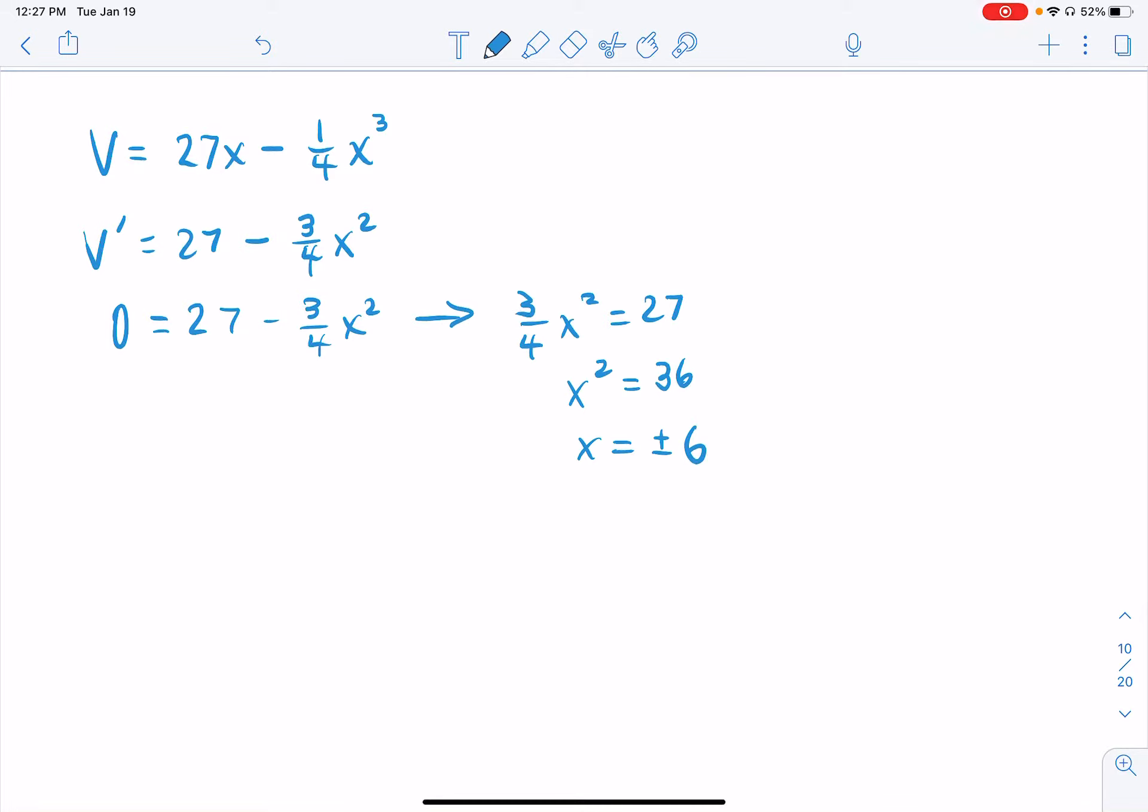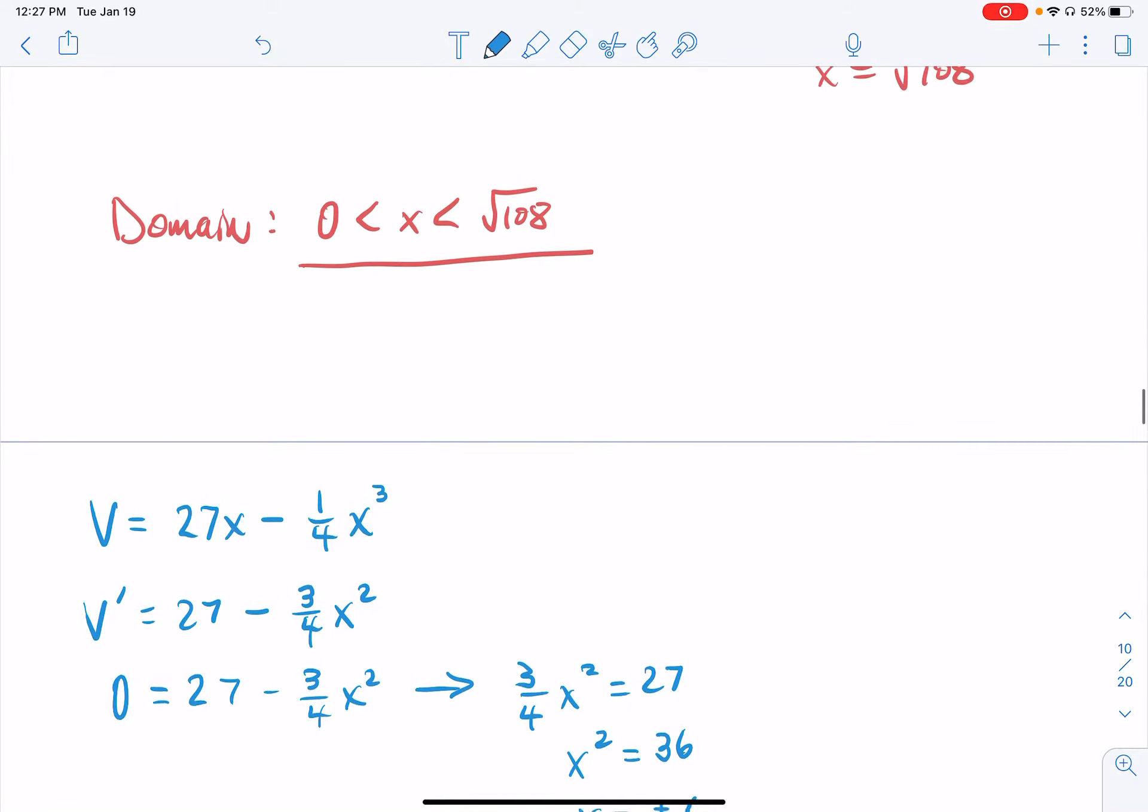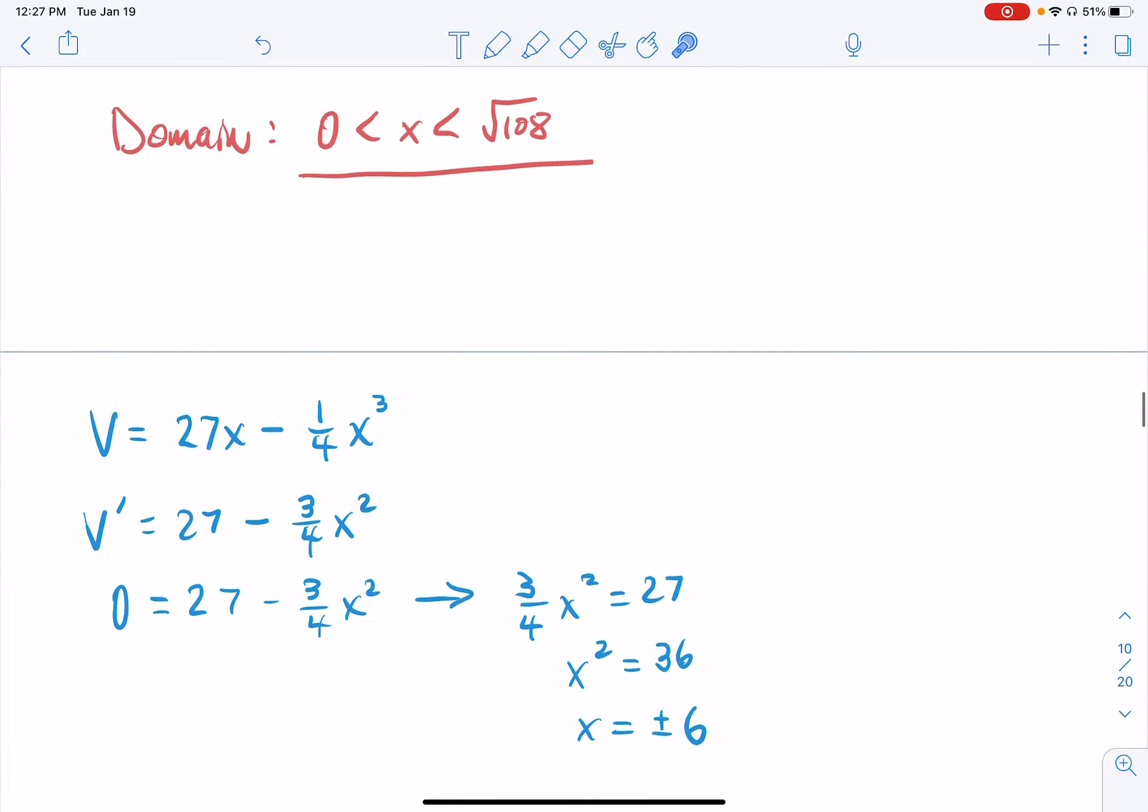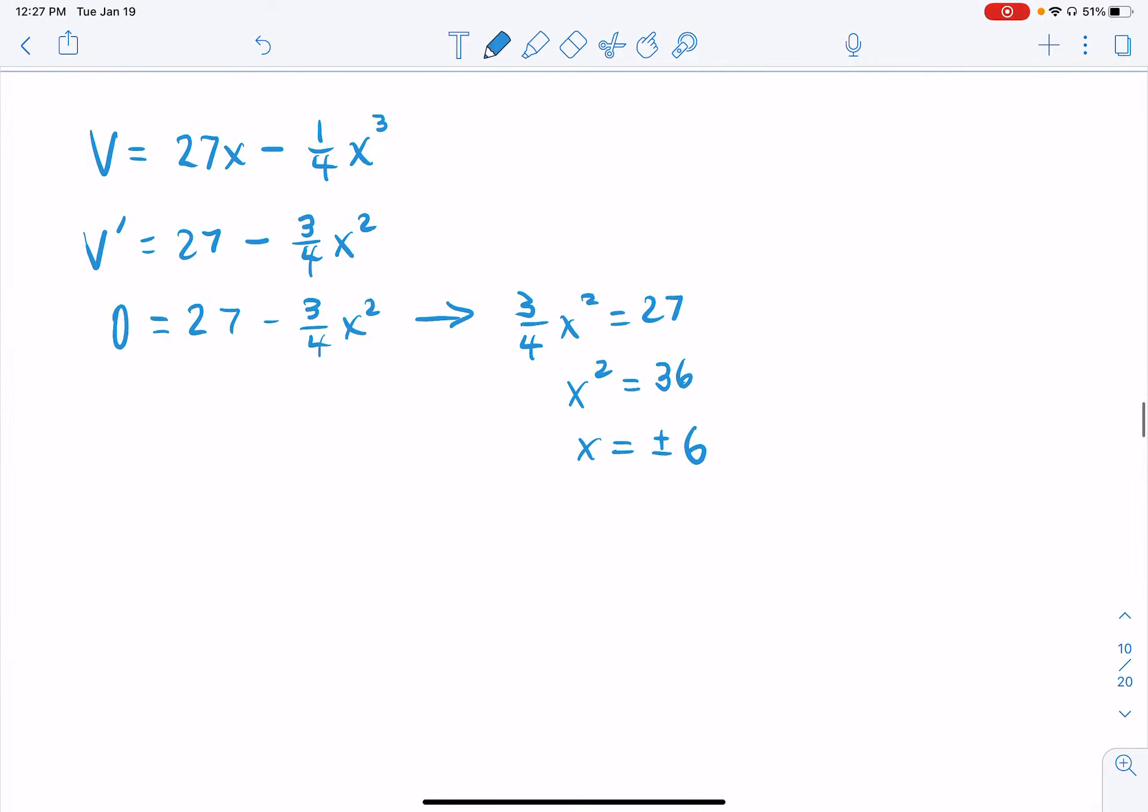I do have two critical numbers, but recall that our domain is between 0 and the square root of 108. And the square root of 108 is a little bit bigger than 10. And our other critical number is going to be to the left of the 0. We don't want it. So really, our only critical number in the domain is x is equal to positive 6.